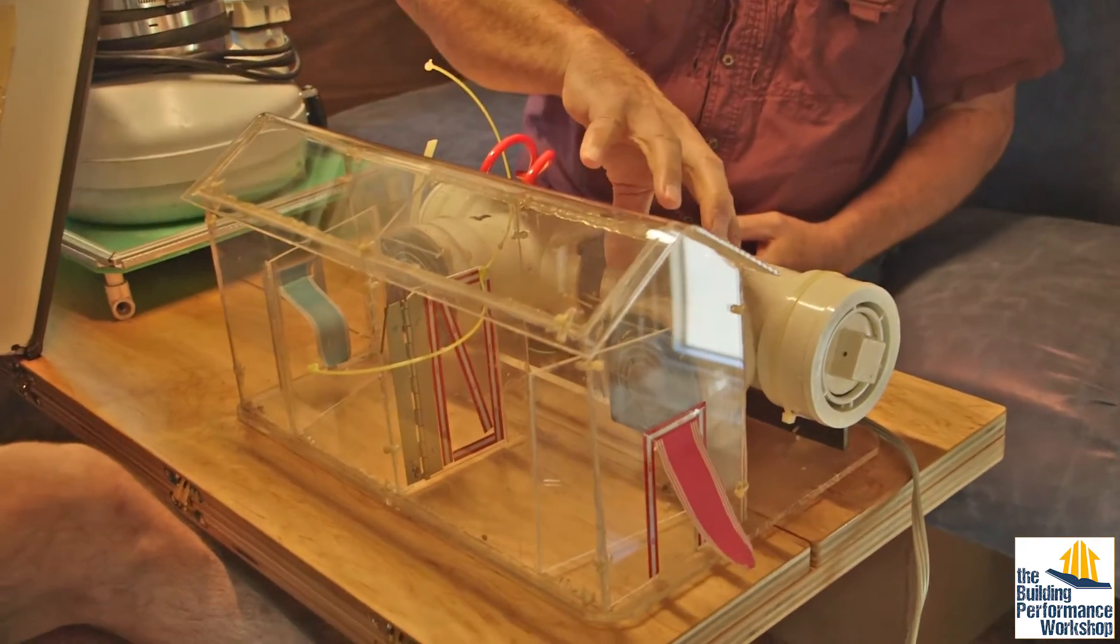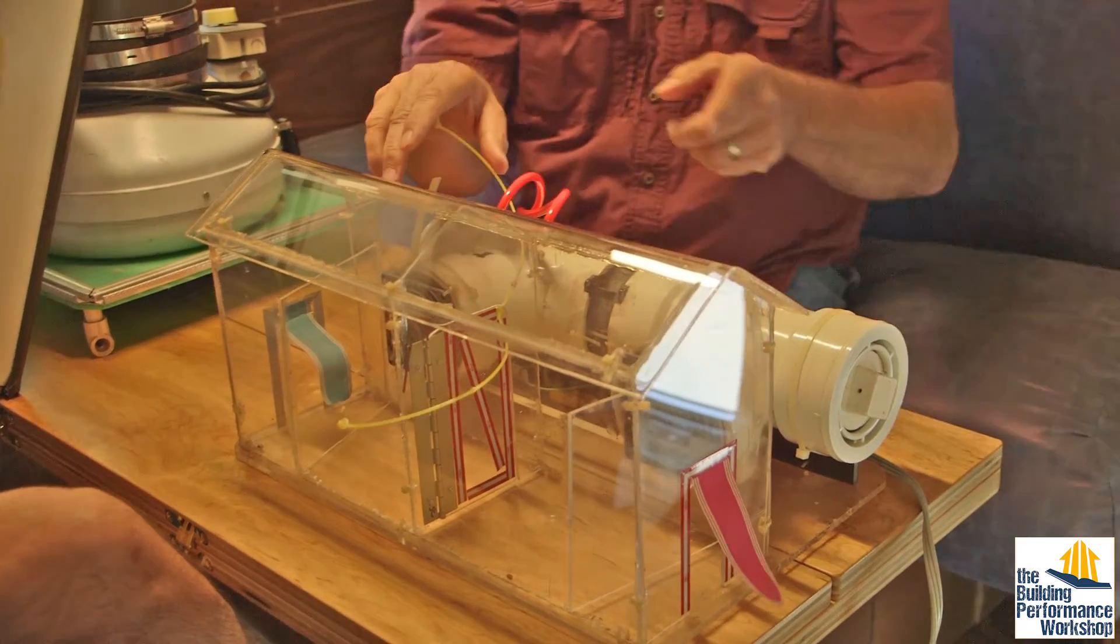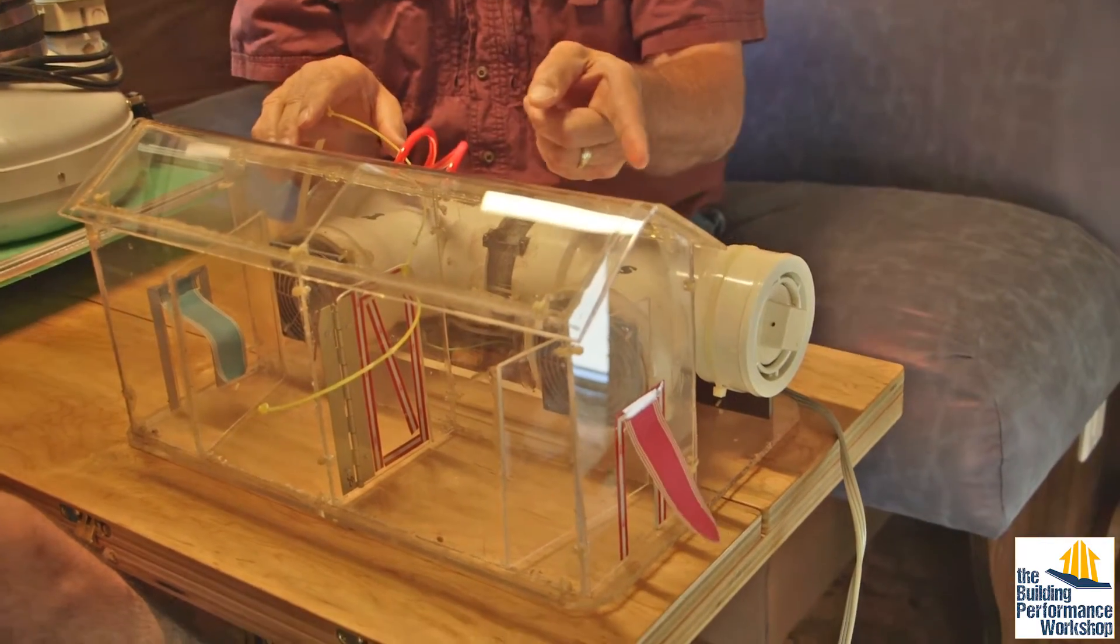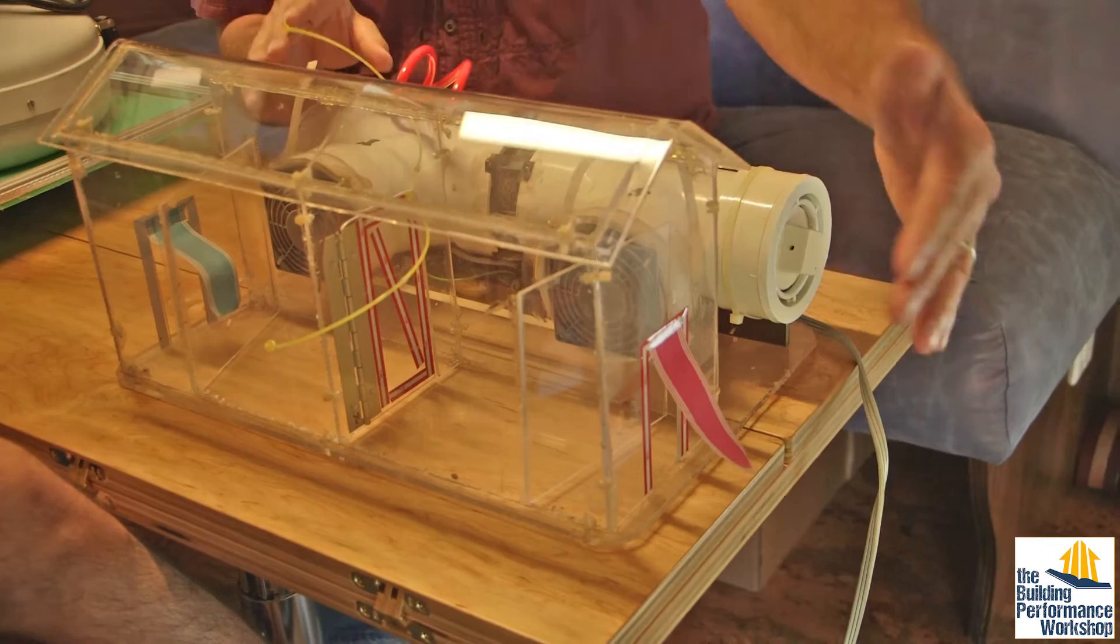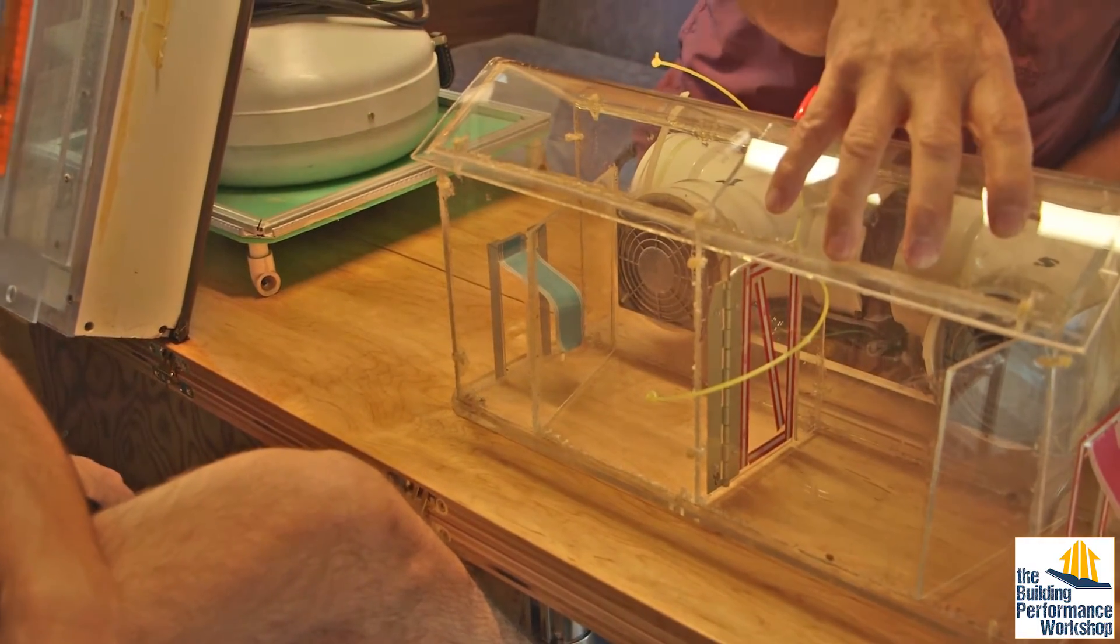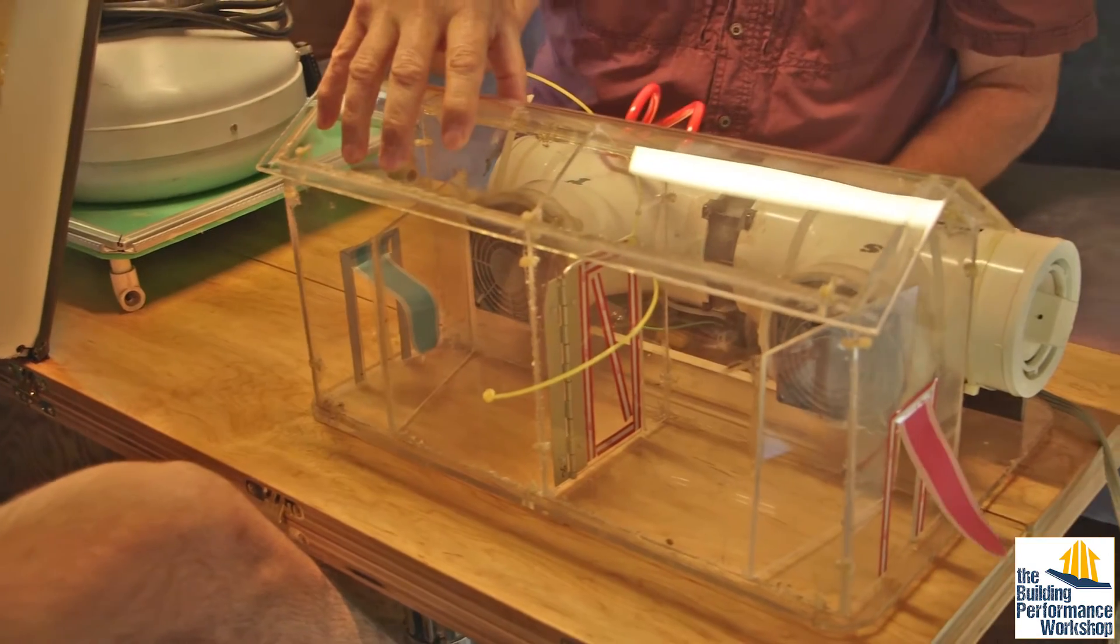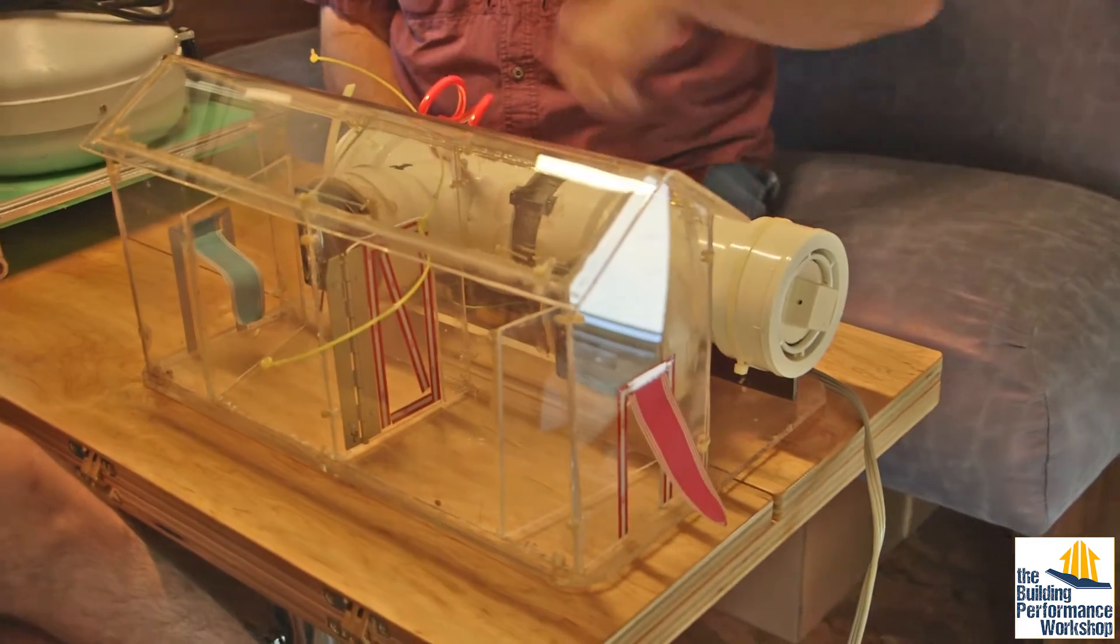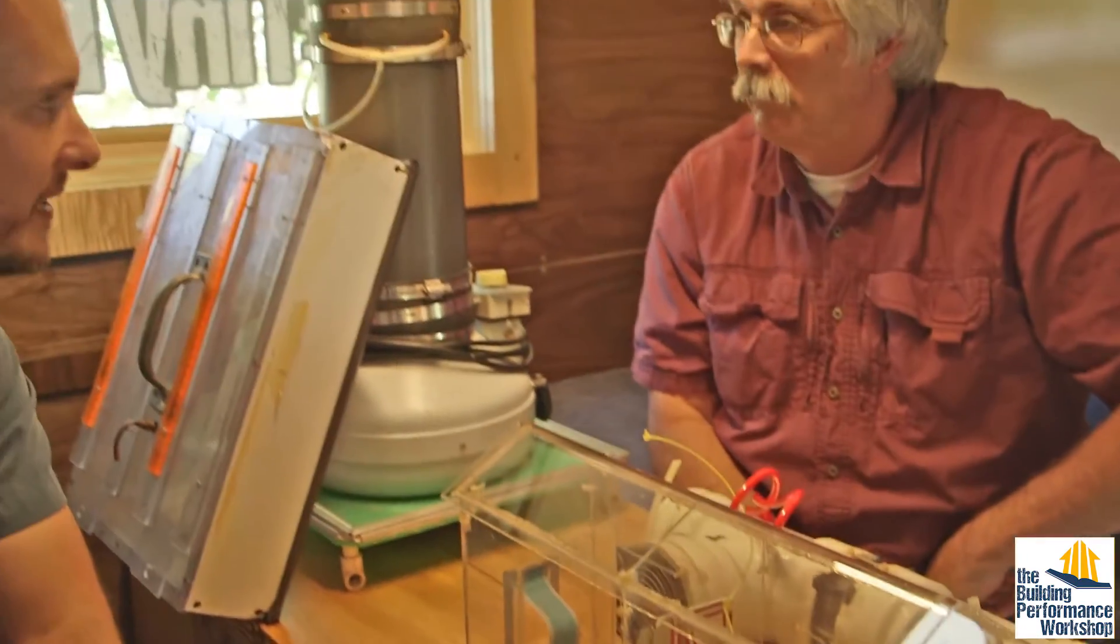Notice what happens when I close the bedroom door. Now I have no way for the air from the supply to get back to the return. And so I'm using the world as my pathway. So I'm blowing it out, coming around, and back in. So I got part of the building under a positive pressure, part of it under a negative pressure.